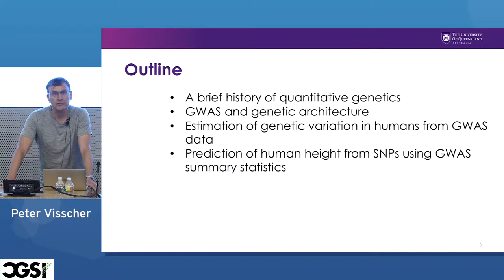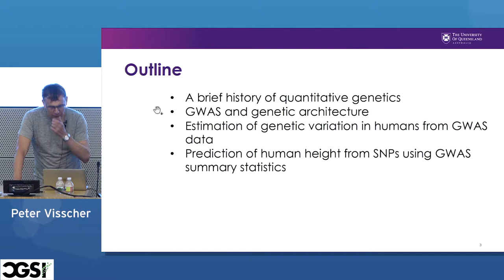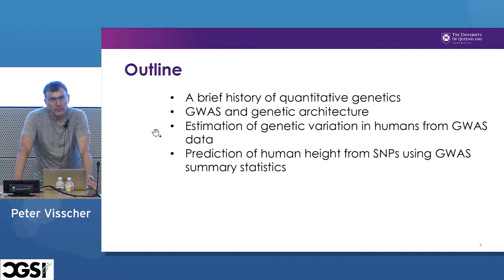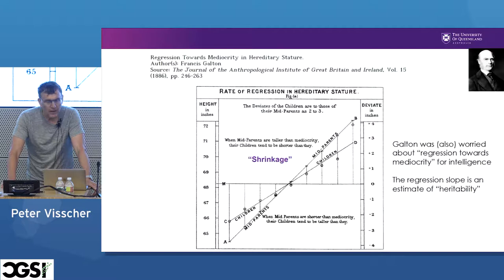So this is the outline of my talk. I'll start with a brief overview of quantitative genetics, which is my field of research. Then a little bit about GWAS and genetic architecture, and then the main topic, which is trying to estimate genetic variance in human complex traits from data generated from genome-wide association studies. And finally, just because it's fun, some comments about prediction of traits, in particular human height and where that's going.